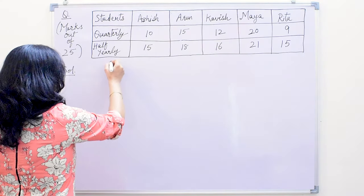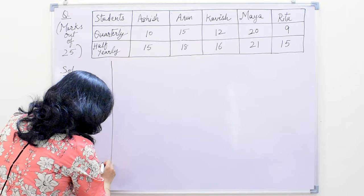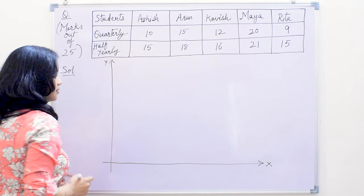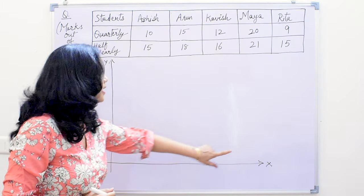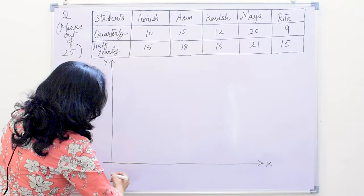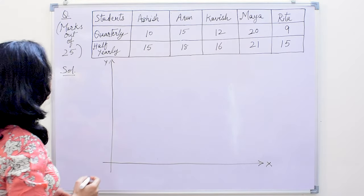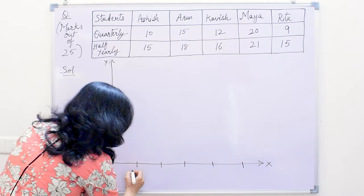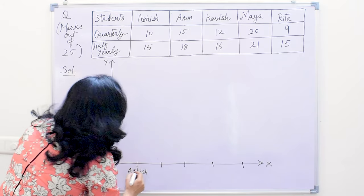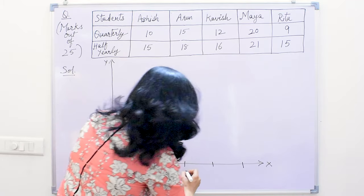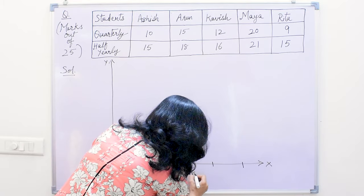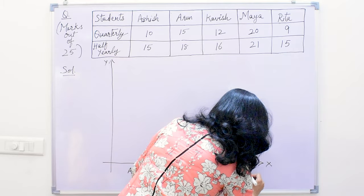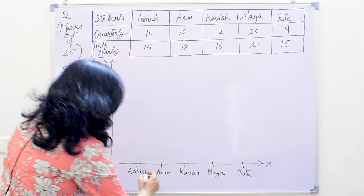Now let us start. We will make the two axes — this is the horizontal line, the x-axis, and the vertical line, the y-axis. On the x-axis we will write the names of the students. So we have written the names of the students.